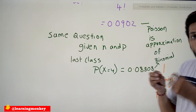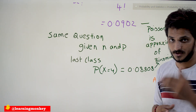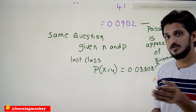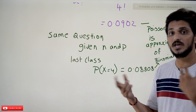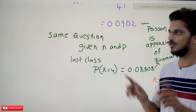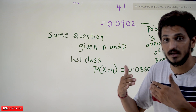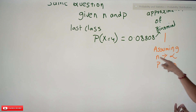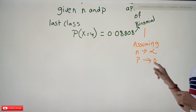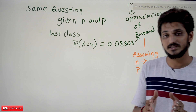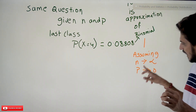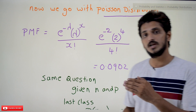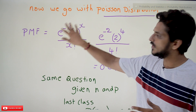We don't get exactly the same value, but the probability values are very close. Poisson distribution is an approximation to binomial distribution. When n and p are given, use binomial; when the rate value (lambda) is given, use Poisson — both yield approximately the same probability. One more important point: since we don't know n and p individually, we assume n is almost near to infinite and p is almost near to zero. In coming classes we will understand why we assume this and how the Poisson PMF is derived from those assumptions.